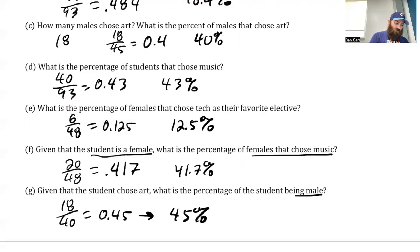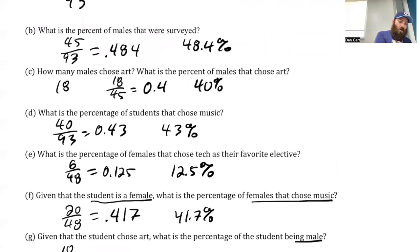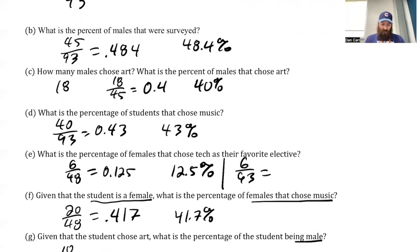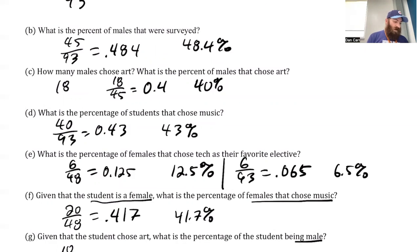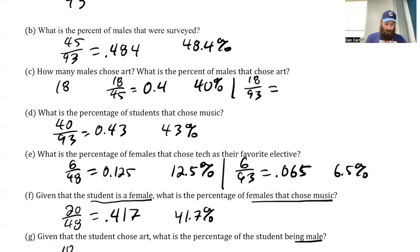I'm going to go back and modify some of these answers because I didn't like the way they were written. For example, question E — percentage of females that chose tech — I think that's supposed to be 6 out of all the students, which is 93. So 6 divided by 93 is 0.065, which is 6.5%. And for C, let's change that to 18 out of the 93 total students. So 18 divided by 93 gives me 0.194, which is 19.4%.